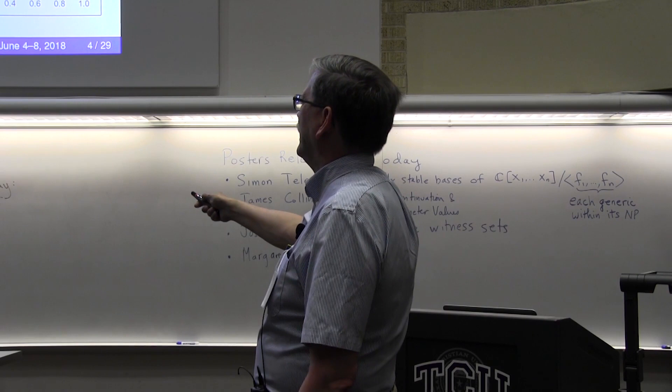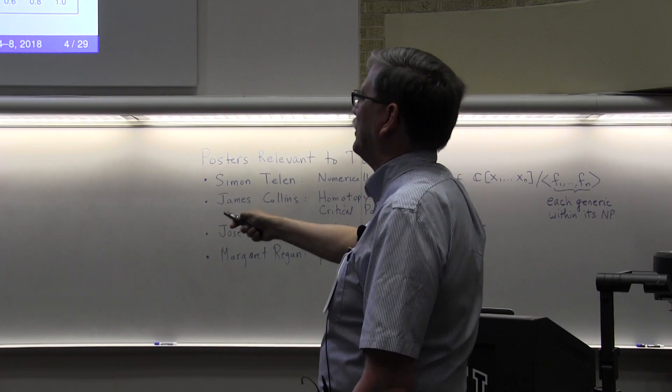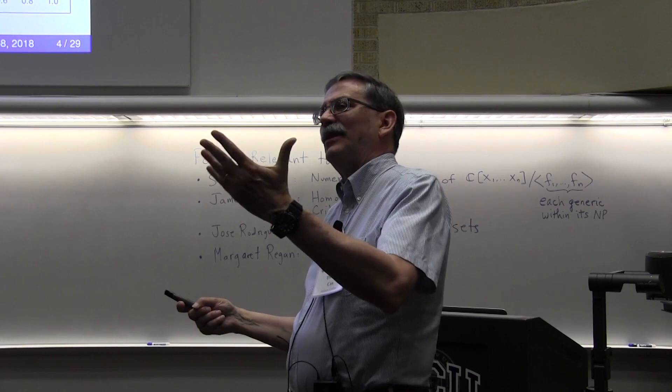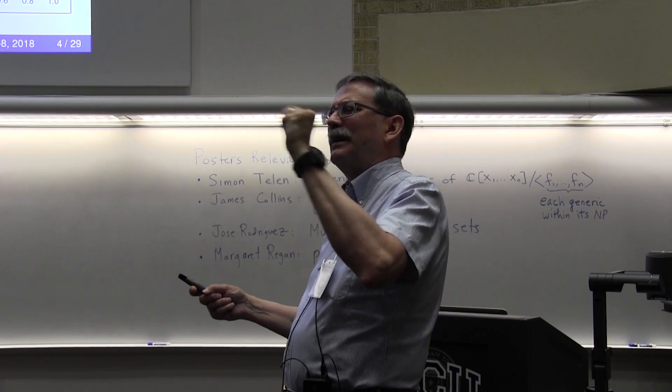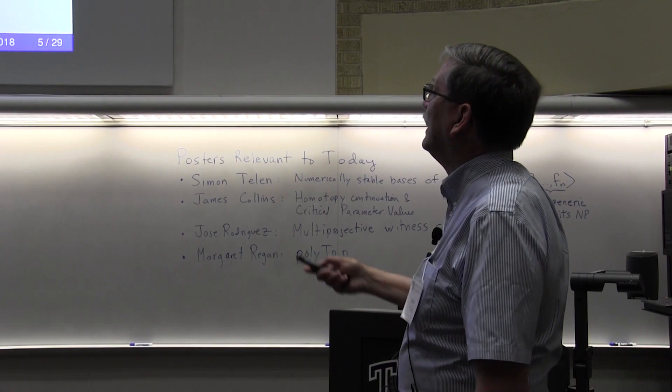Even over the complex numbers, path crossings can still happen. But if we were a little naive in picking a straight line homotopy, you can throw in a little bit of a curveball to avoid that — that's called the gamma trick.